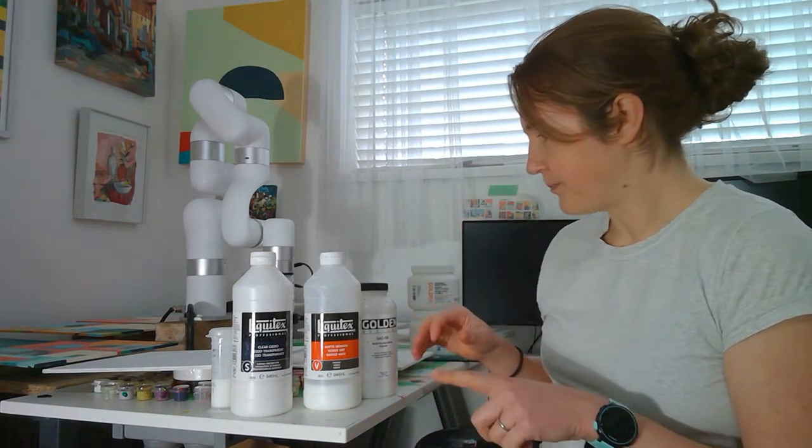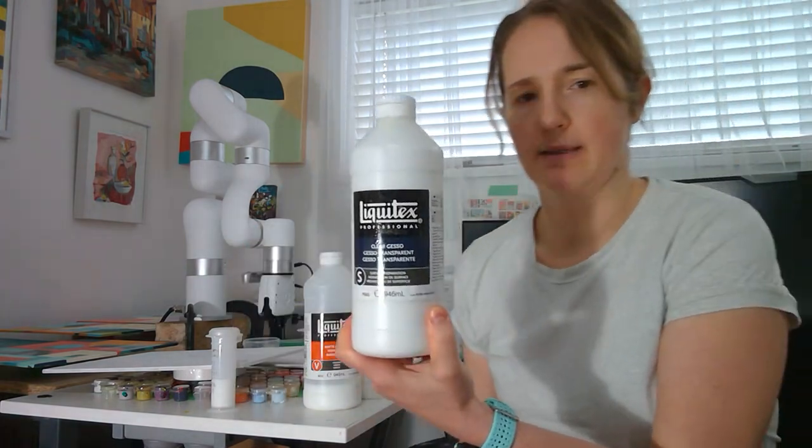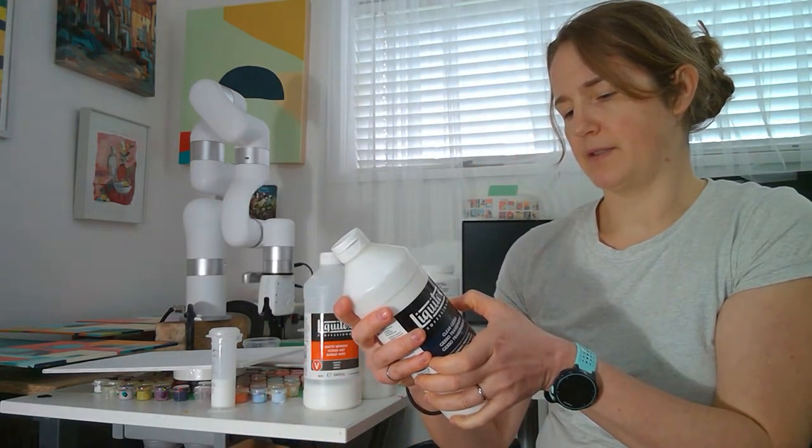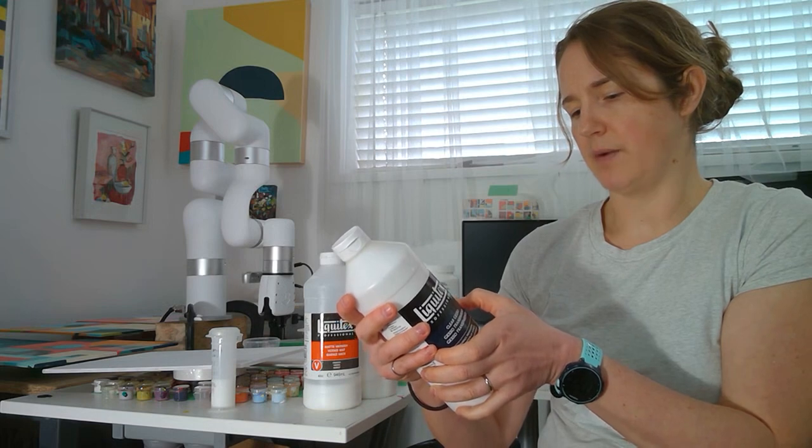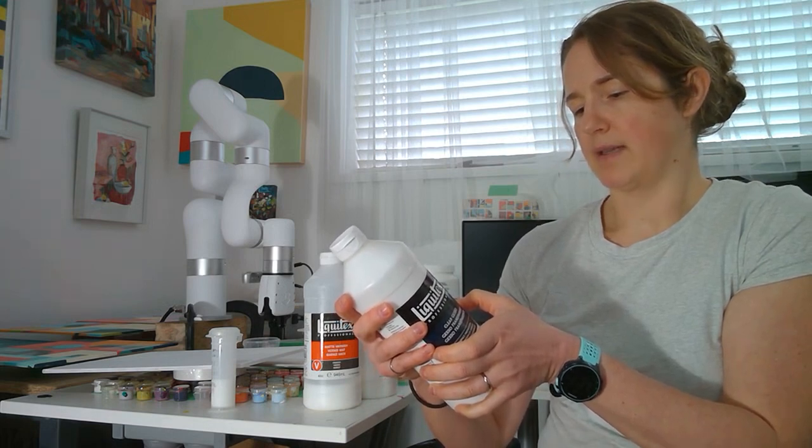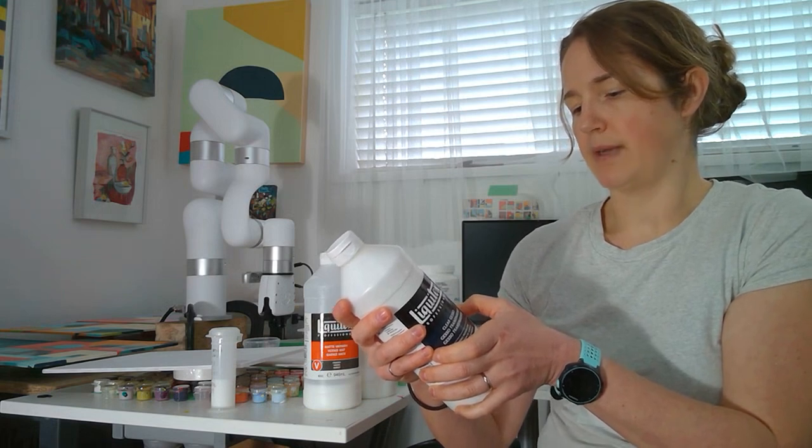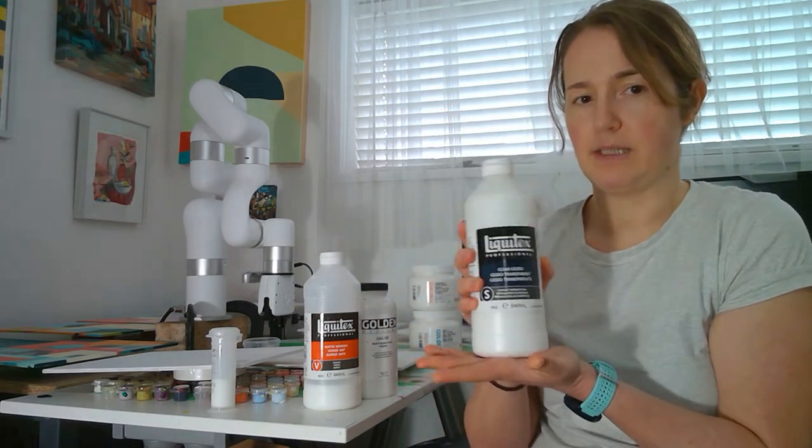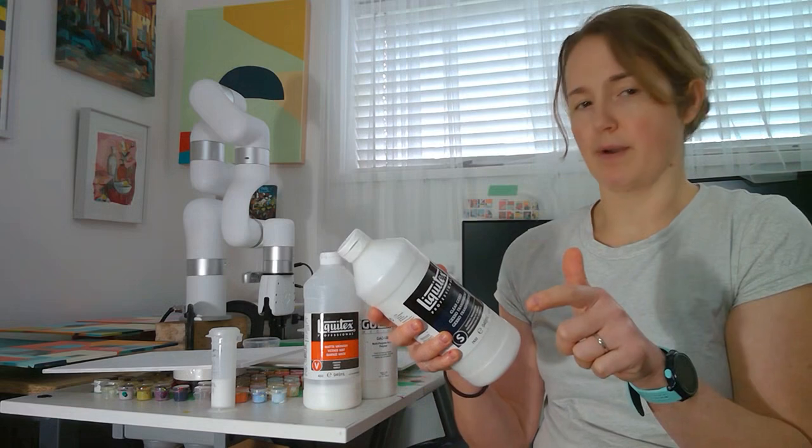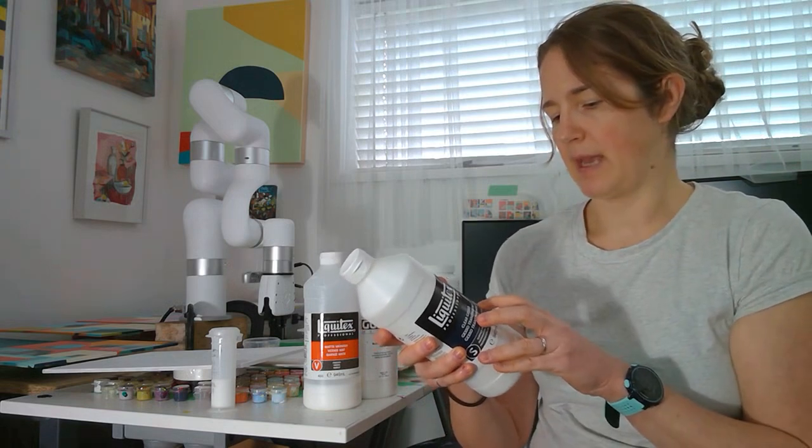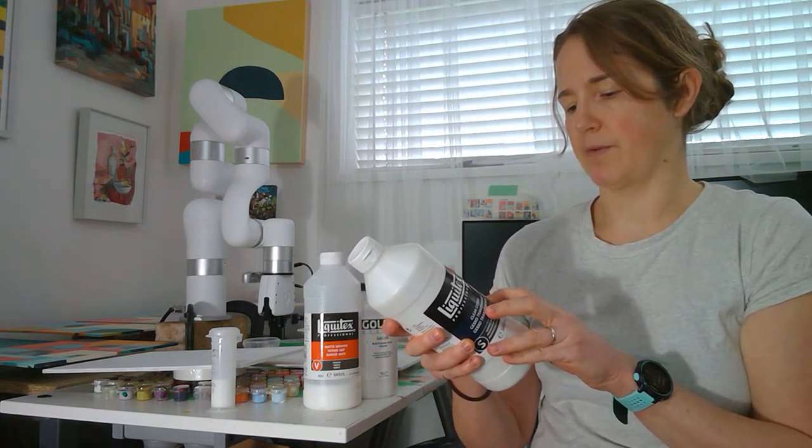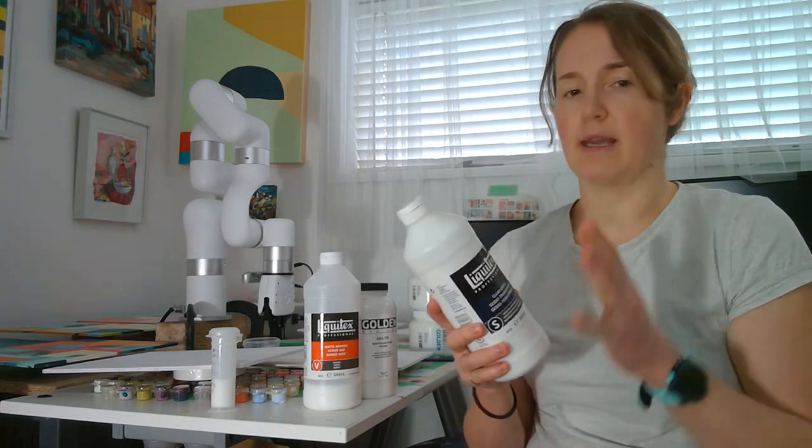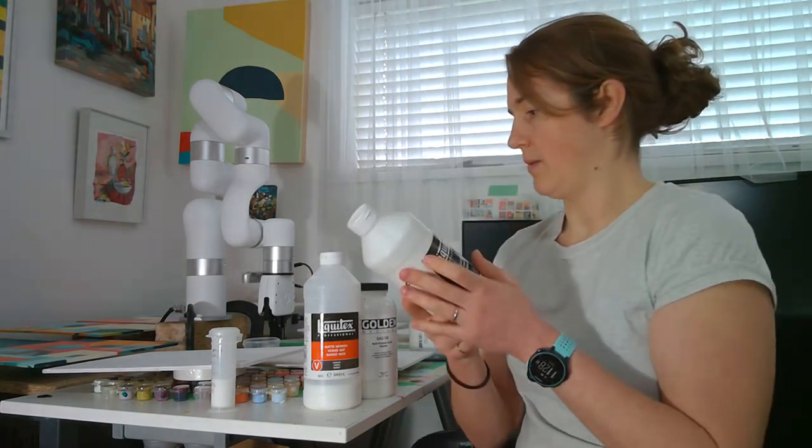The clear gesso I have is the Liquitex brand, and I'll put all the links to the products down below. It seals, stiffens, and provides tooth; dries translucent, non-yellowing for acrylic, oil, pastels, and other media. Apply to raw canvas, hardboard, paper, wood, and non-oiled surfaces. Another reason I like this is because I did use this exact clear gesso on paper. Can tint with acrylic color, and that's one thing I said at the start that I like the fact that you can mix acrylic paint with any of these products.